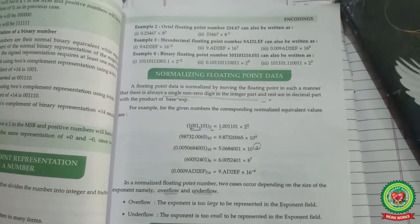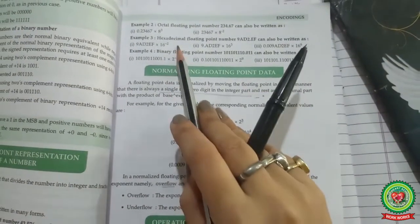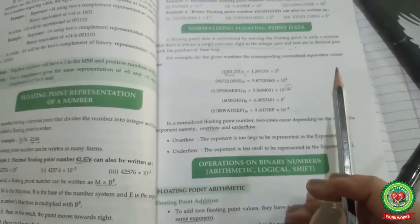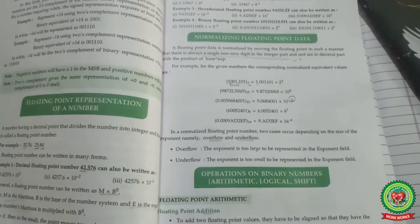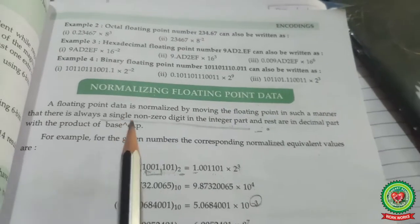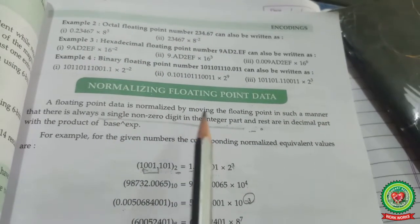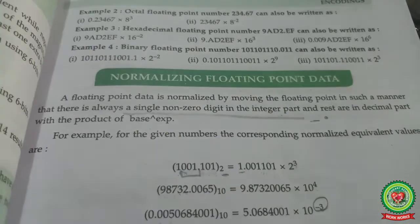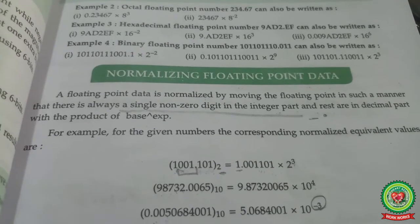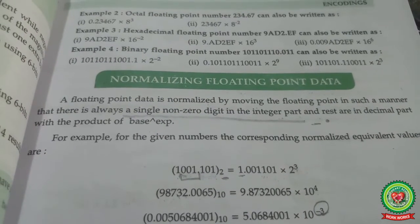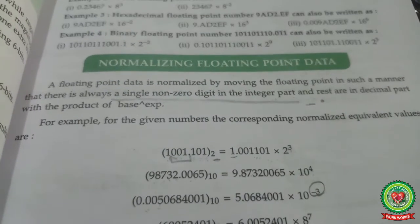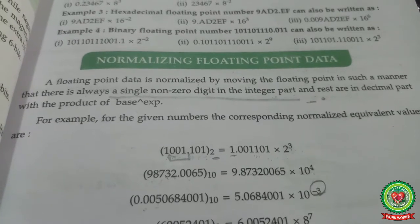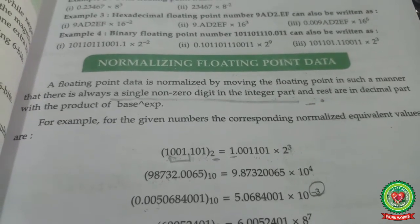In this way we can also have variants of hexadecimal floating point numbers and binary floating point numbers. The next topic is normalizing floating point data. A floating point number is normalized by moving the floating point so that there is always a single non-zero digit in the integer part, followed by digits in the decimal part, multiplied by the base raised to power exponent. Let us understand it with the help of an example.